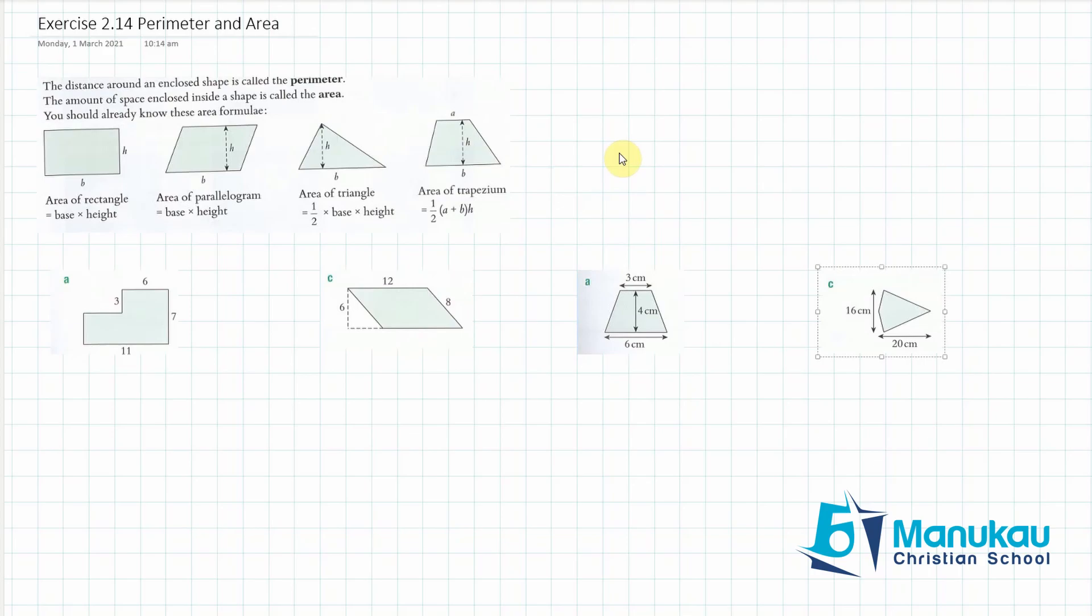You already know this to be base times height, so that should be fairly simple for you. The perimeter, of course, will be two times the base, two times the height, and add them together. Now, the area of a parallelogram is the base times the height also, and you might like to think about why that is. What we could do is we could cut this little bit off here and then flip it, just slide it into this bit here. You can see that that's the same, and you can now see that you've got a rectangle with a base and a height, and so that's why the area of a parallelogram is just simply the same as the area of a rectangle.